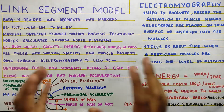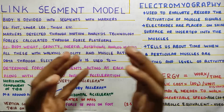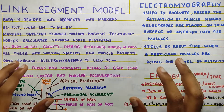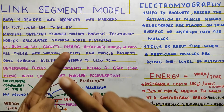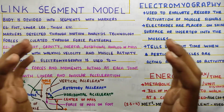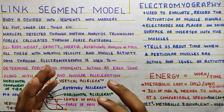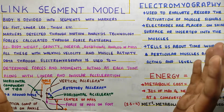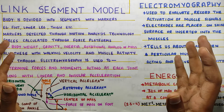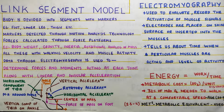Now we move on to the final topic — the link segment model, where everything is brought together. All the data collected so far, the variables of kinematics and the variables of kinetics, are combined and a final analysis is done. This gives a wide perspective about gait — how and what muscles are acting at what time of the gait cycle.